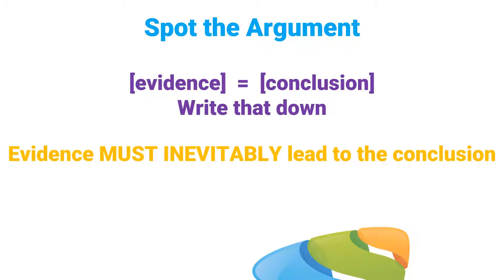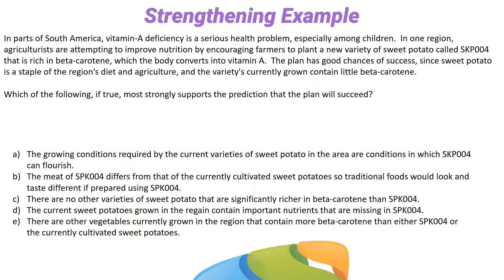It's best to write down both the evidence and the conclusion. All right, let's do an example. This is a bit too long to read out loud, so go ahead and read it to yourself and then we'll dive in. Okay — first, what's the conclusion? What's the goal? That's right: we want to increase vitamin A among people in the region. Now, how do we do that? We're going to plant the 004 sweet potato plant.